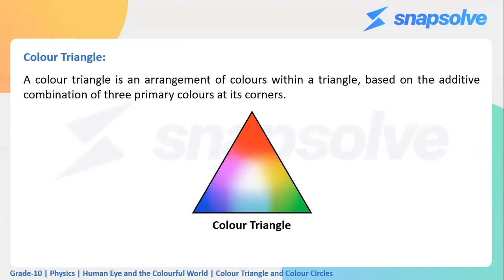As you can see in this figure, the primary colors red, blue, and green are at the corners. When we add red and blue, we get magenta. When we add red and green, we get yellow. When we add blue and green, we get cyan. And when we add all three primary colors, we get white, which is represented at the center of the triangle.